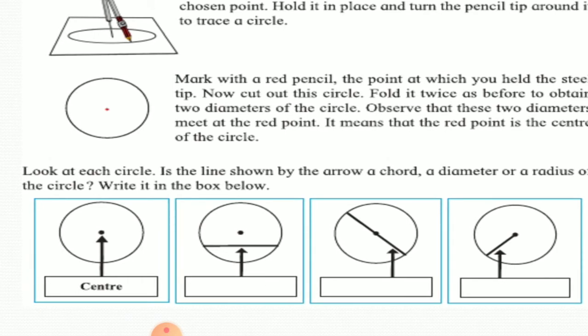Now here you can see there are four pictures of the circle given. In the first picture there is a point which is the center of the circle.